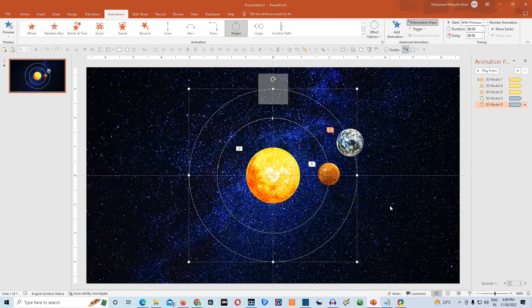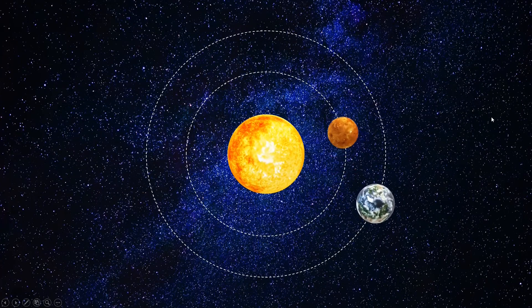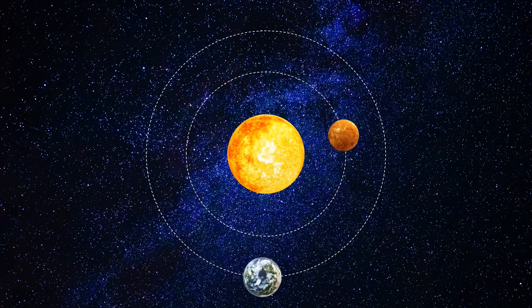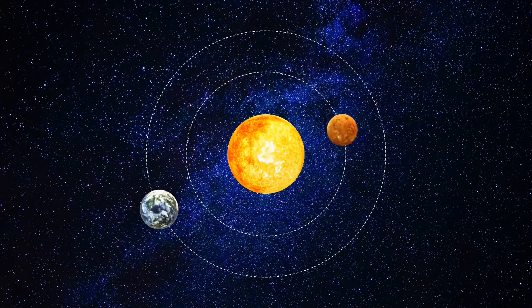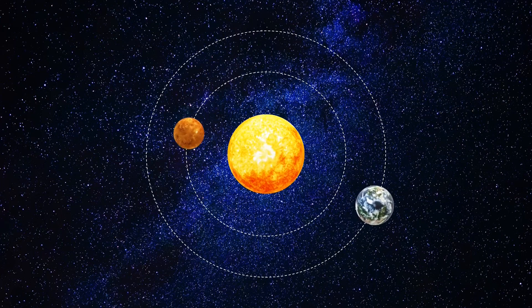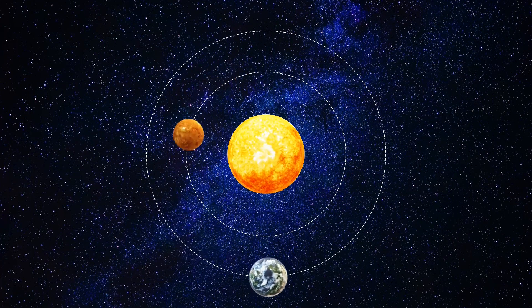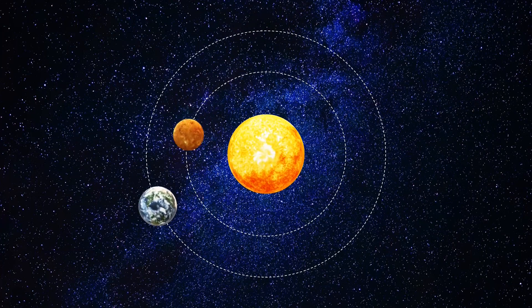Congratulations — our animation is ready now. Let us go to Slideshow and see how it's looking. It's looking extremely beautiful. This is how you create the presentation on Venus and Earth's rotation around Sun. Friends, if you like this video, please subscribe to our channel and share this video with as many friends as possible so that they can also benefit from this tutorial. Do take very good care of yourself. Thank you very much for watching. We'll see you next time.